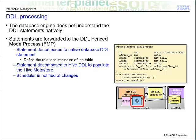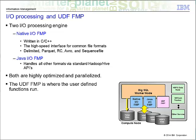One thing to note is that the DDL is run in a fenced mode process, or FMP, which is an isolated process to ensure that it does not affect the other processes. We also have our I/O processing engine. With BigSQL, we have two processing engines. We have a native I/O engine — the code for this is written in C and C++ and is highly optimized. It only knows a specific set of file formats as listed. We also want it to handle any Hive tables as defined in the Hive catalog. If we see a particular table that isn't recognized, we hand it down to the Java I/O layer. The Java I/O layer handles all other formats via the standard Hadoop or Hive APIs.